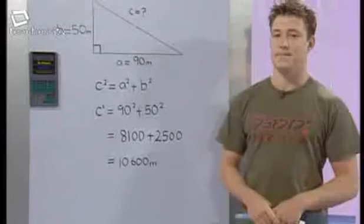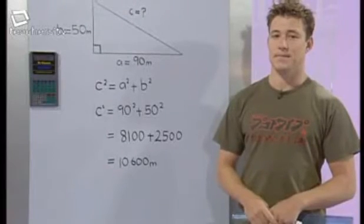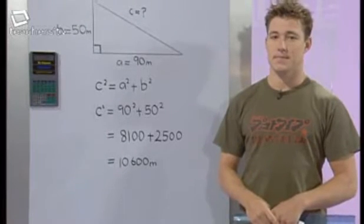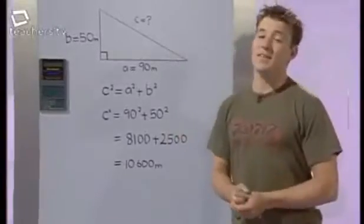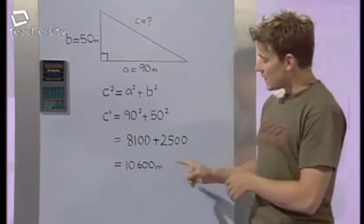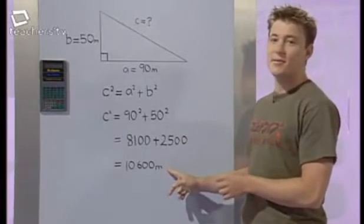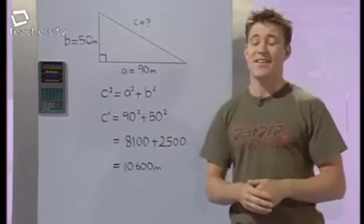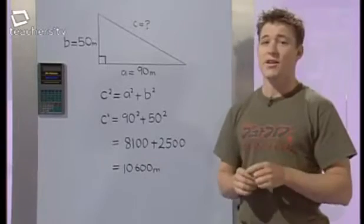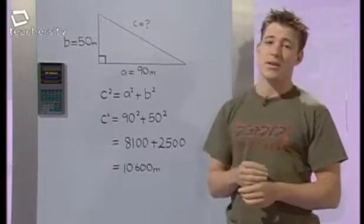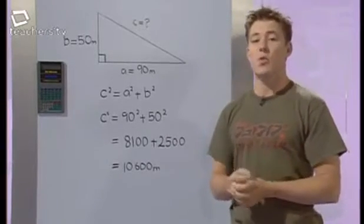So, who's right and who's wrong? Is Ben right with an answer of 10,600 metres? Or is Katie right with 103 metres? OK, I'll own up — I made the mistake. I missed out the final step and didn't take the square root of 10,600. It's obvious, really — 10,600 metres of rope is a very long bit of rope. To find C, you need to add A squared and B squared together, and then find the square root.